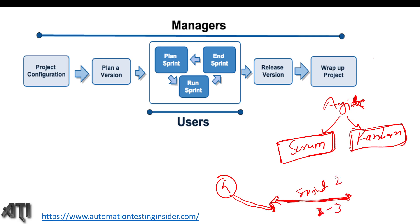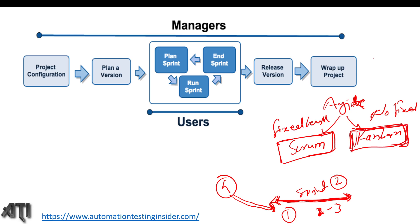Generally, a sprint cycle is two to three weeks — most projects use two weeks, some use three weeks, and some use one week. That is the sprint cycle duration where we deploy our build. Scrum has a fixed-length sprint cycle, whereas in Kanban there is no fixed sprint length. In Kanban, we deploy the build frequently without a fixed time. That is the basic difference between Scrum and Kanban.